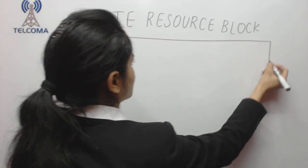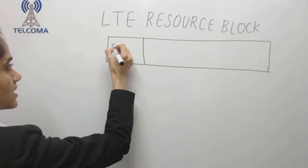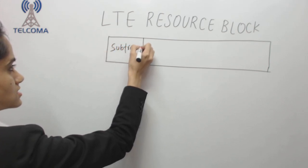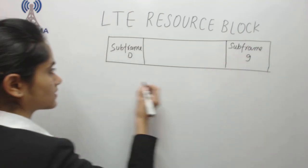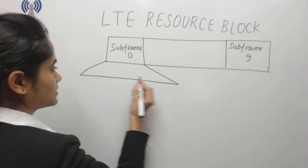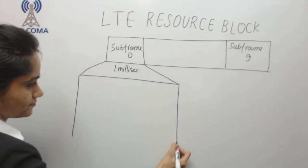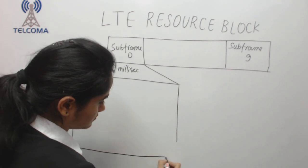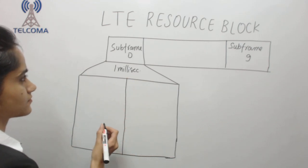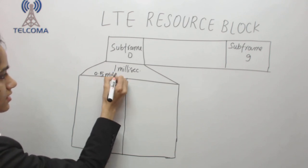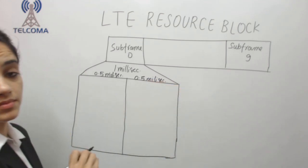Suppose this is a complete frame — I have subframe 0 up to subframe 9. Subframe 0 is 1 millisecond in duration. This 1 millisecond is divided into two parts: 0.5 millisecond and 0.5 millisecond.